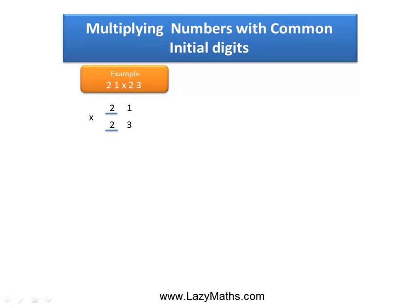As you can notice, the 2 of 21 and the 2 of 23 which are both in the tens place are common digits, and the 1 and 3 of 21 and 23 respectively are in the ones place and these are the uncommon digits.